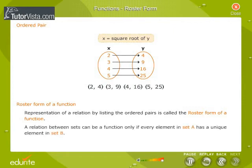A relation between sets can be a function only if every element in set A has a unique element in set B.